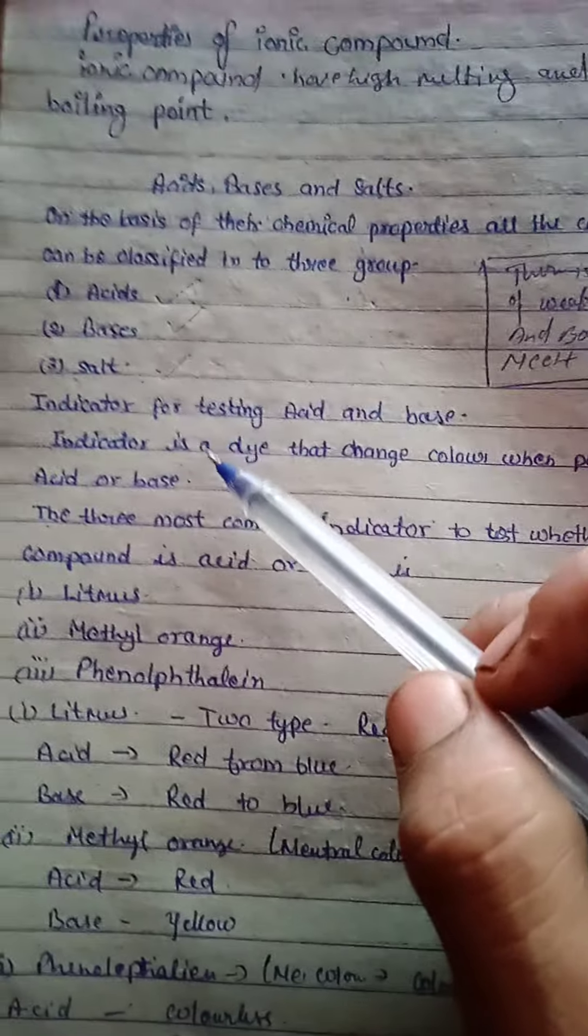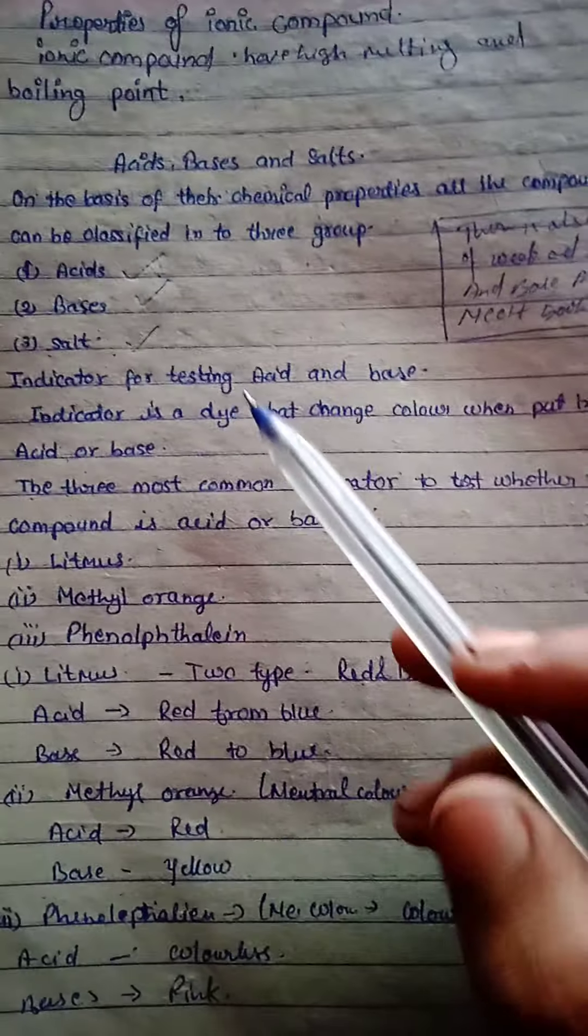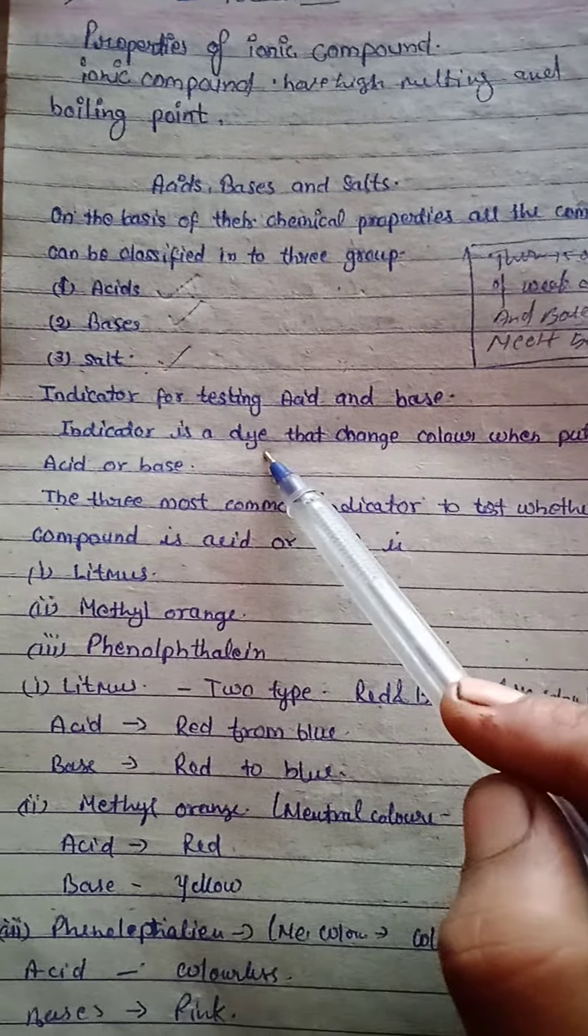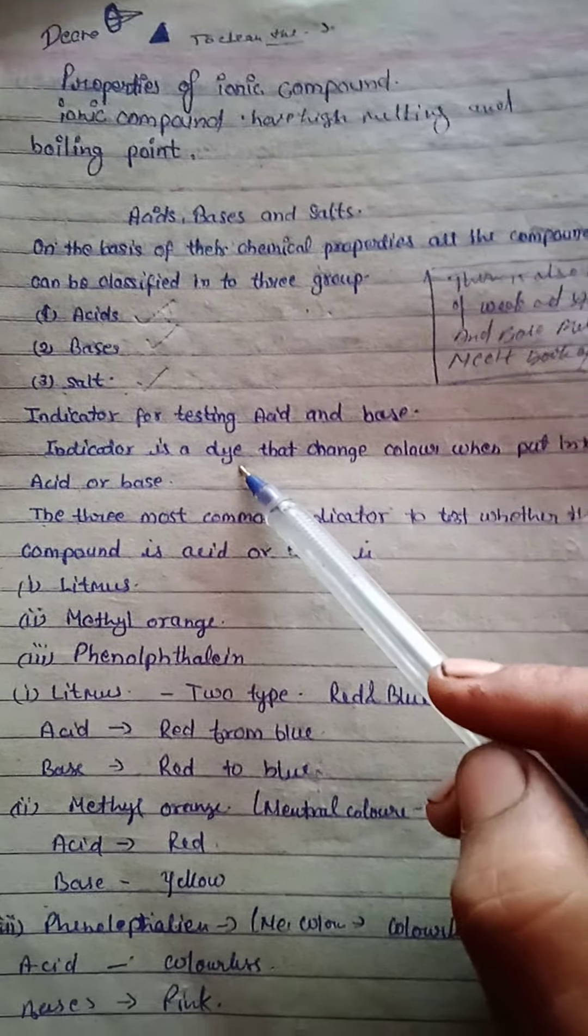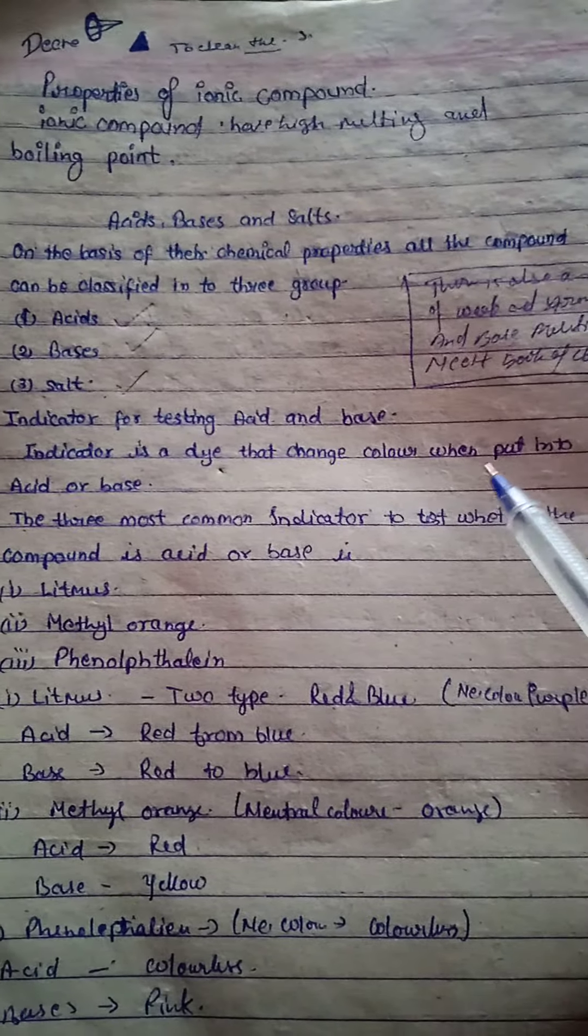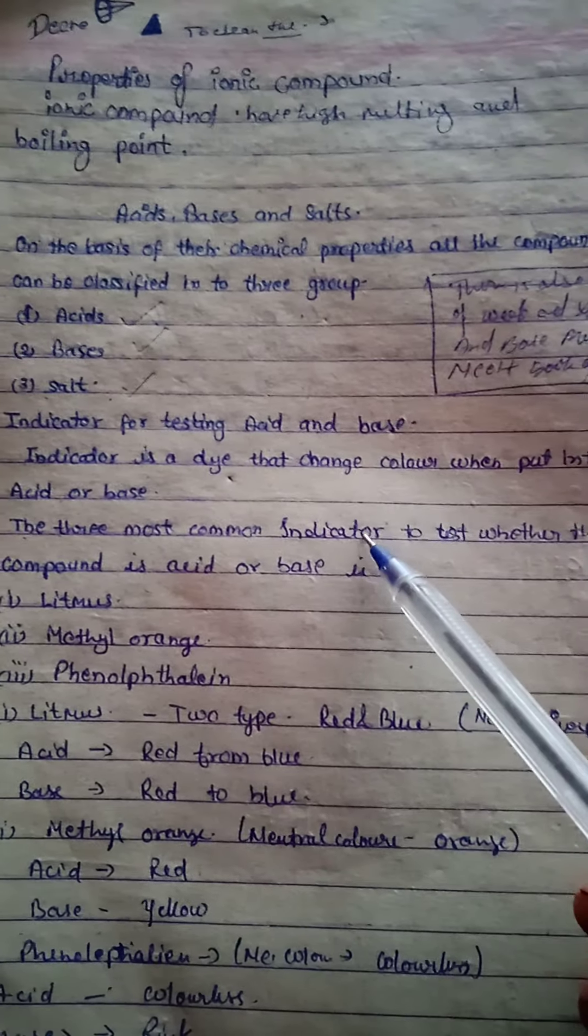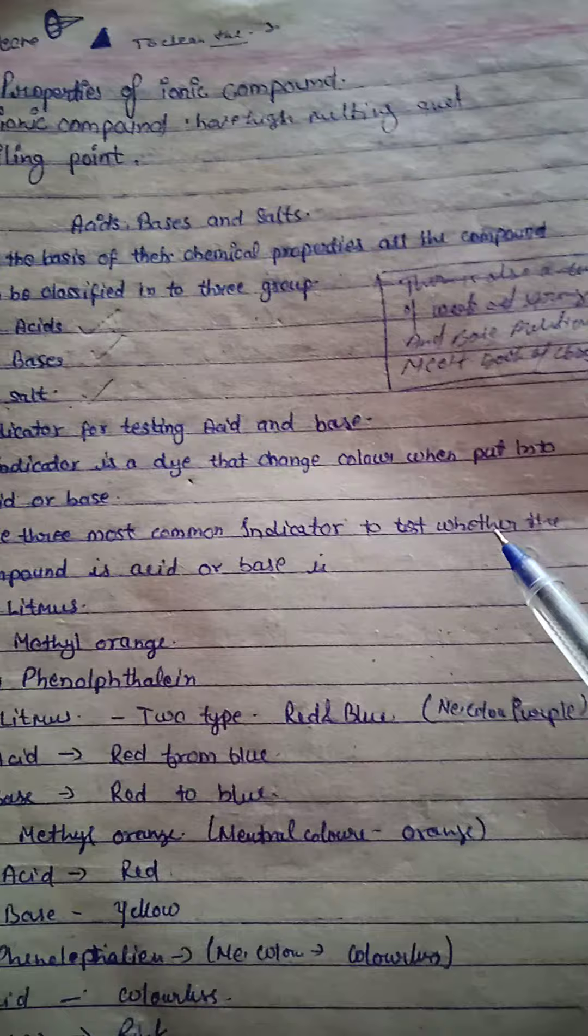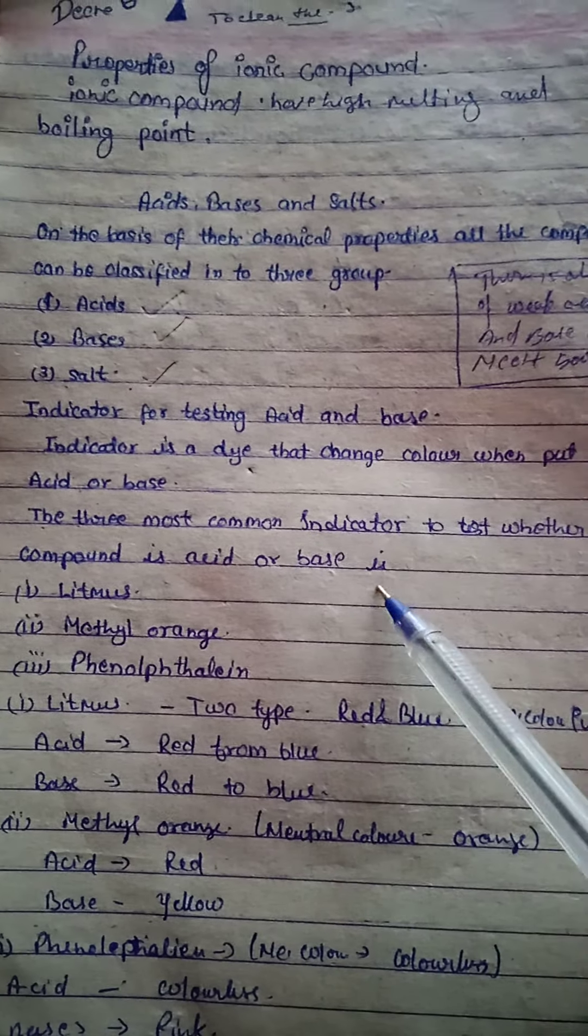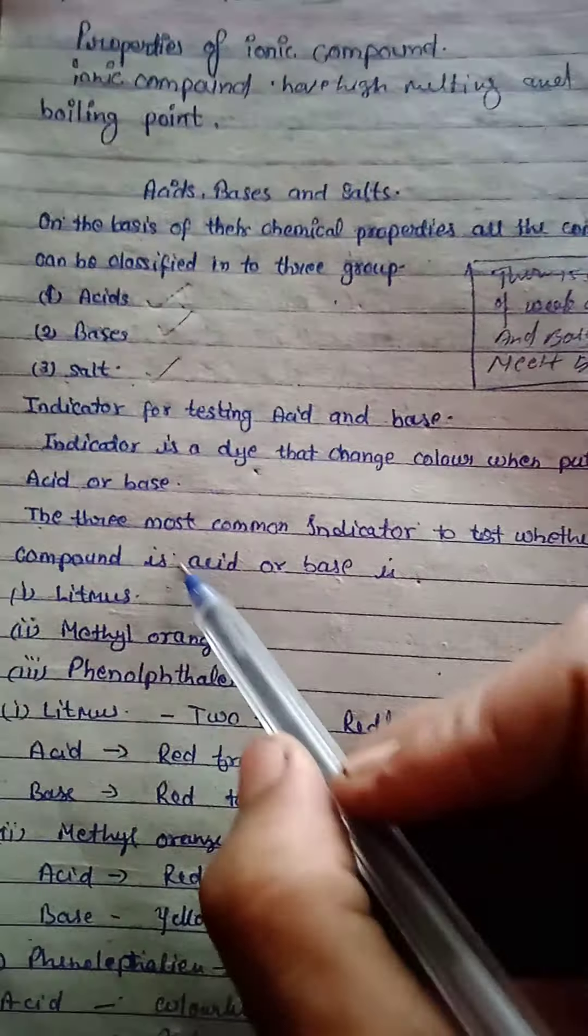That's why we need indicators. So, indicator for testing acid and base: an indicator is a dye that changes color when put into acid or base. The three most common indicators to test whether the compound is acid or base are: